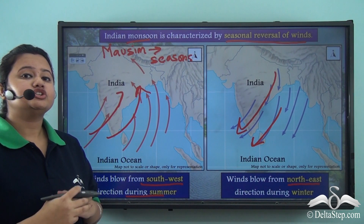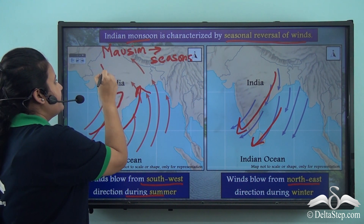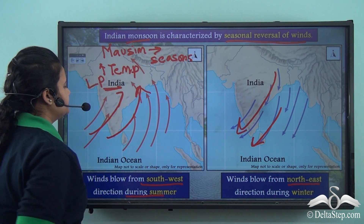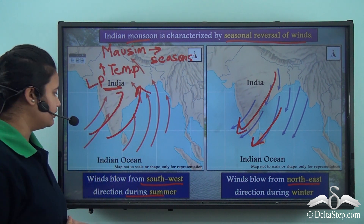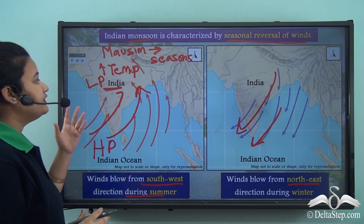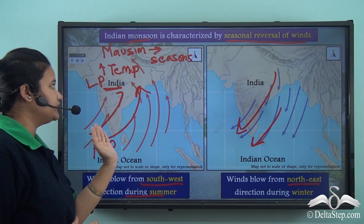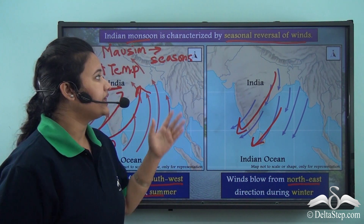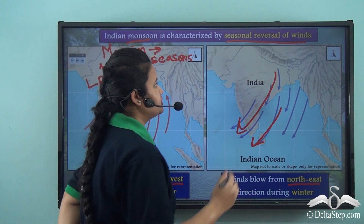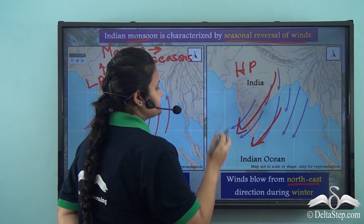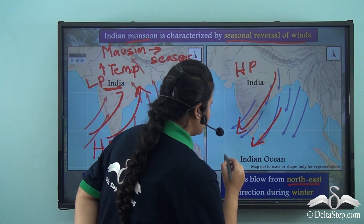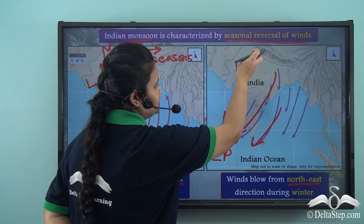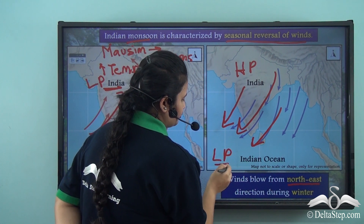This happens due to change in temperature and pressure conditions. During summer, the temperature of the Indian subcontinent is higher, resulting in low pressure over the subcontinent, whereas the surrounding water bodies are comparatively cooler, so high pressure exists there. So the winds blow from the high pressure region of the water bodies towards the low pressure region of the Indian subcontinent. During winter the conditions get reversed — due to low temperature, high pressure exists over the subcontinent, whereas the adjoining water bodies are comparatively warmer, so low pressure exists over them, and winds move from land to sea.